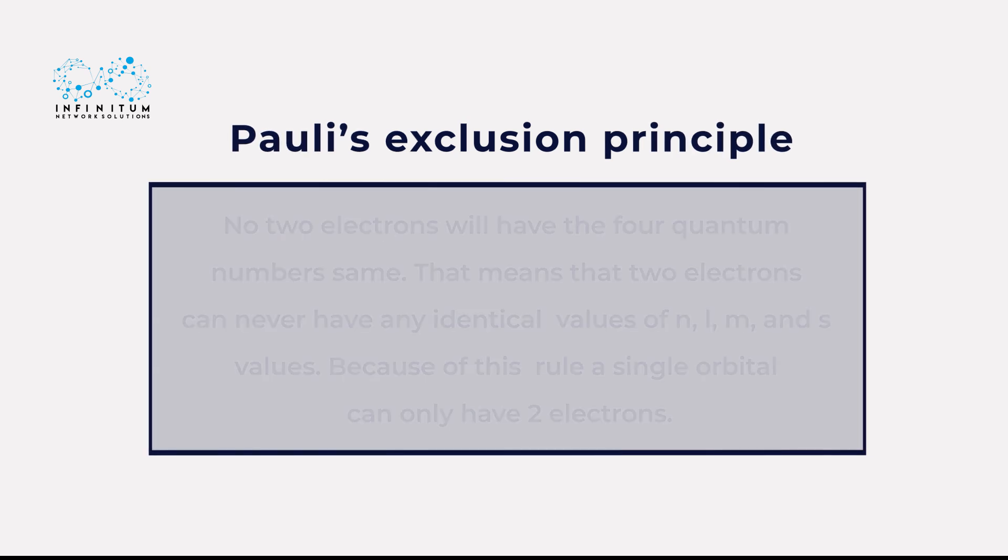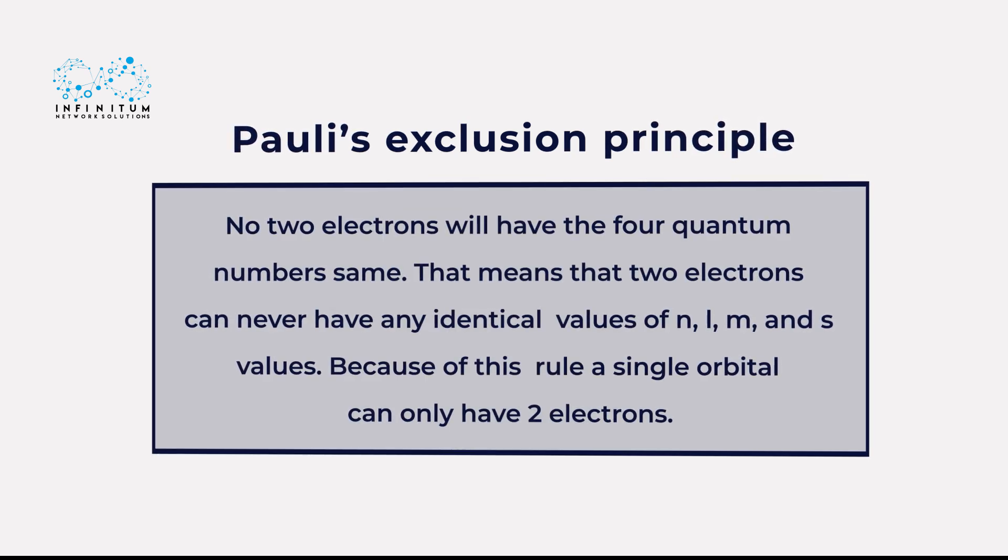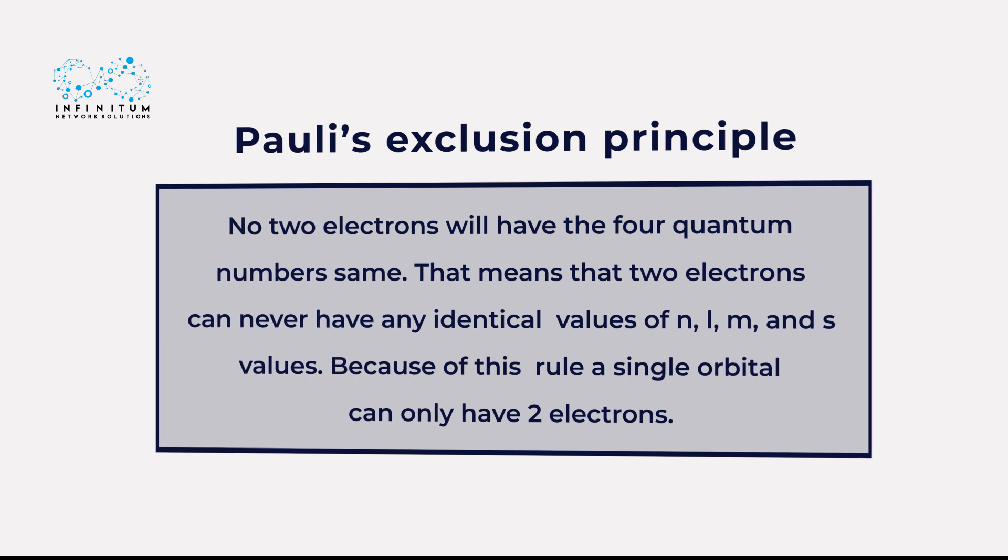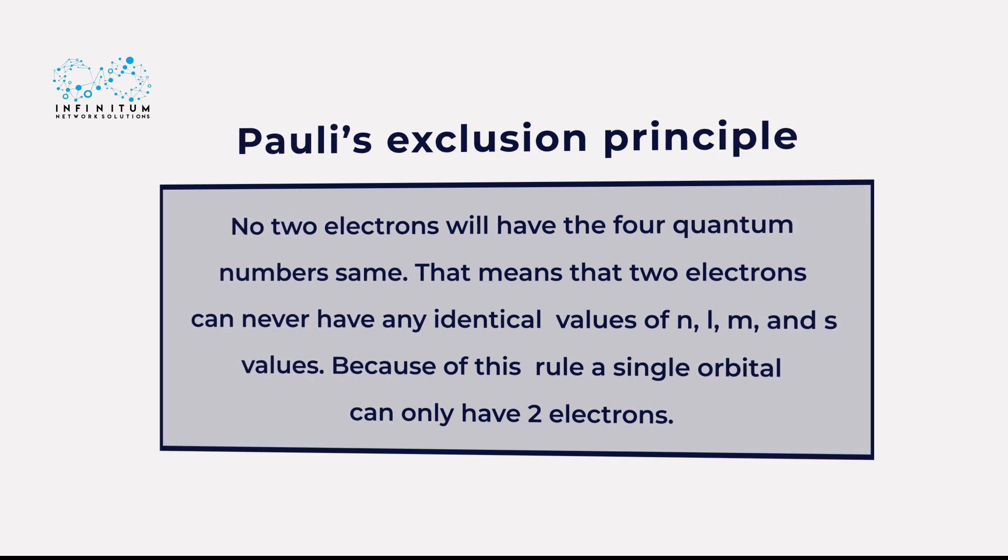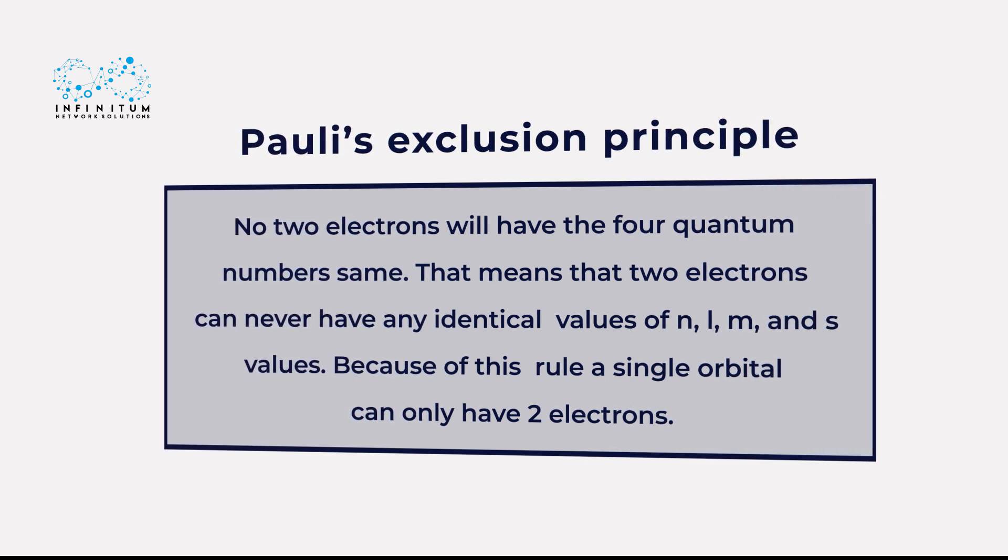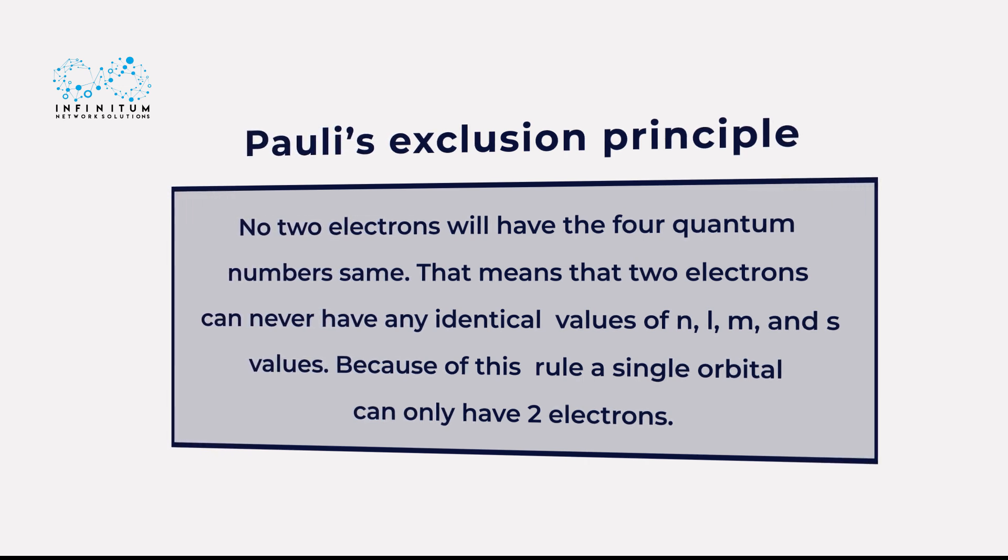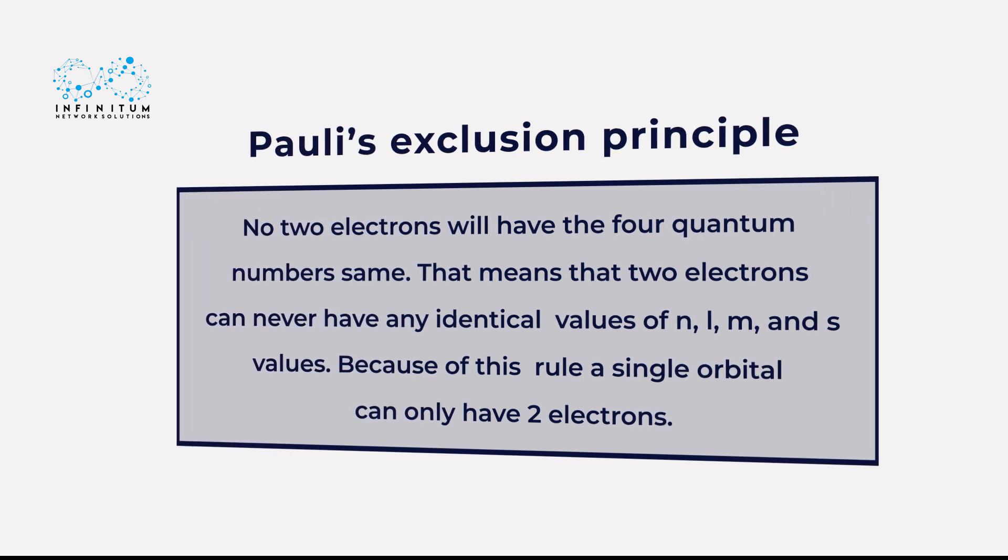The third important rule for electronic configuration, that is, Pauli's exclusion principle, states that no two electrons will have the four quantum numbers the same. This means that two electrons can never have identical values of n, l, m, and s values. Because of this rule, a single orbital can have only two electrons.